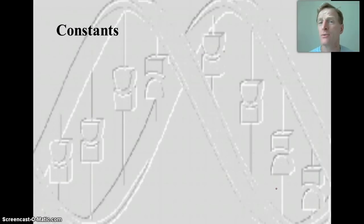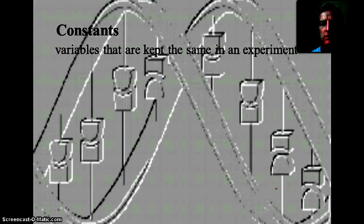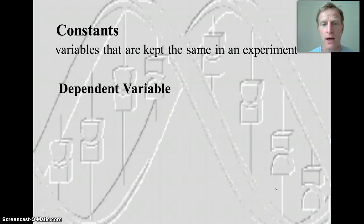Some of the other variables that could affect plant growth, like temperature, amount of water, humidity, amount of light. Those variables we don't want changed in our experiment because they also affect plant growth. So those variables we're going to call constants. Constants are variables that are kept the same in the experiment. So we only want to isolate and change one variable. Otherwise, we don't really know what caused any differences in the plant growth if we didn't control all those other variables.